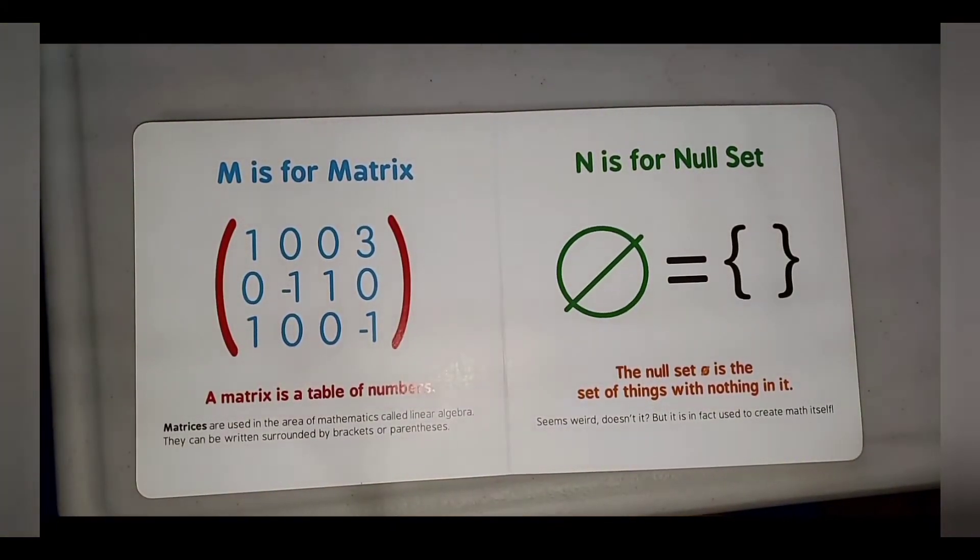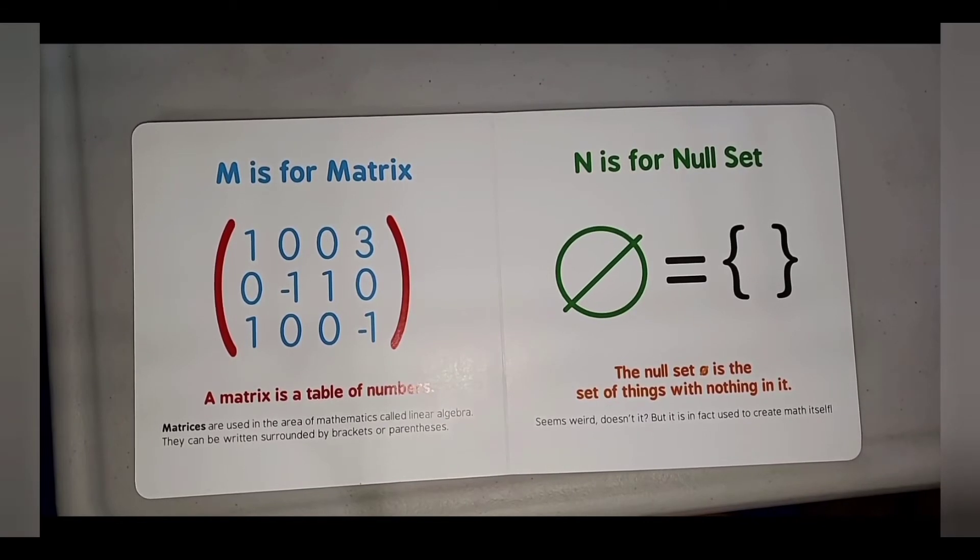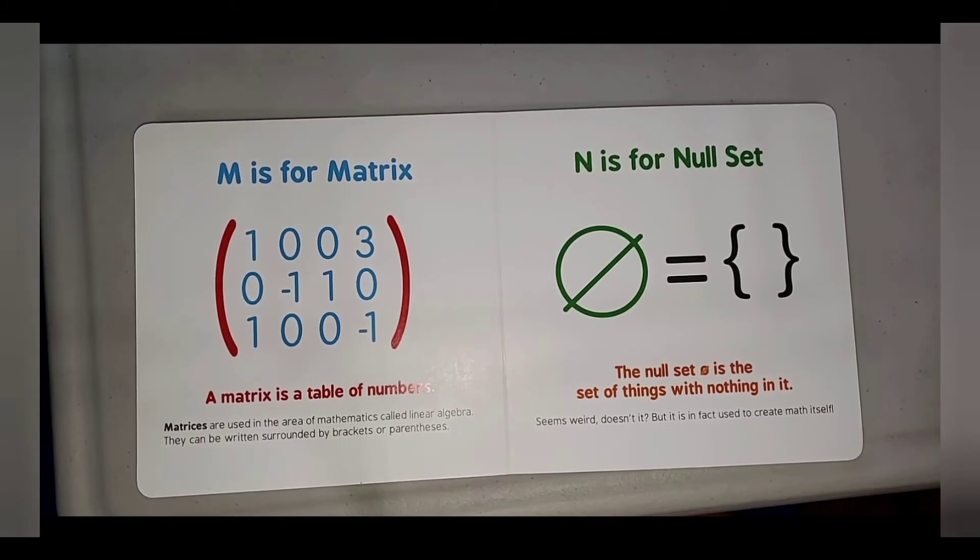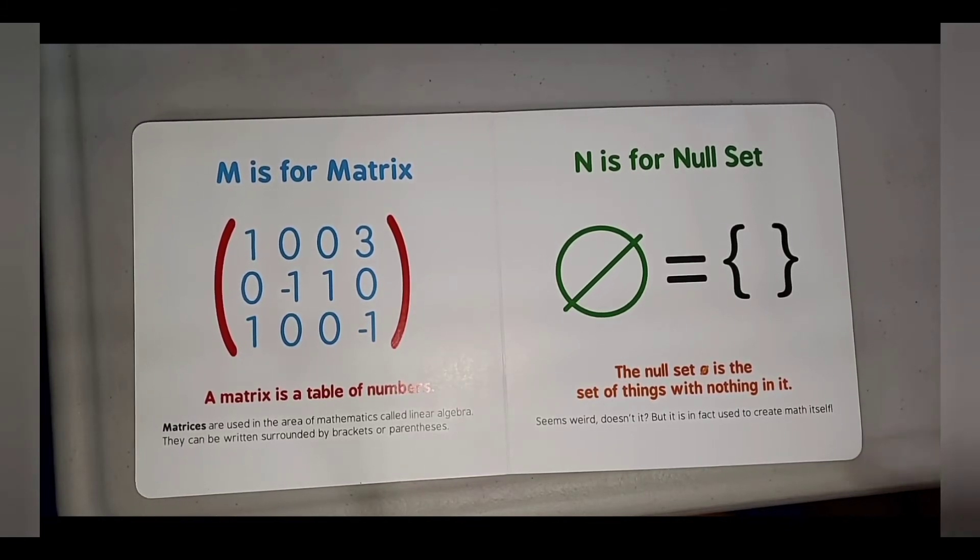N is for Null Set. The null set is not zero. It is the set of things with nothing in it. Seems weird, doesn't it? But it is the concept used to create math itself.